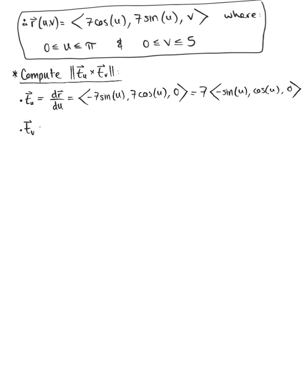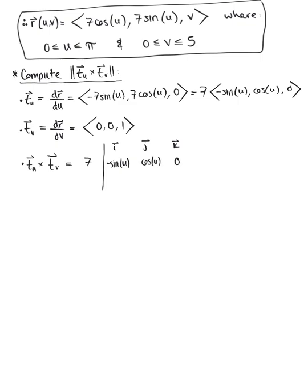We need the tangent vector in the v-direction, r_v, which is the partial derivative of r with respect to v. Looking at our parameterization, the first two components go to 0, and the z-component is 1, so r_v = ⟨0, 0, 1⟩. Now we're ready to compute the cross product of these two tangent vectors. Be careful — don't forget about the 7 on the tangent vector in the u-direction. So this will be 7 multiplied by the determinant of the 3×3 matrix with first row ⟨i, j, k⟩, second row ⟨−sin(u), cos(u), 0⟩, and third row ⟨0, 0, 1⟩.